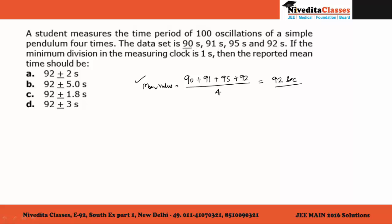Now the second part is finding the absolute error. For the mean absolute error, our mean value is 92. So for the first observation, the error is 2 (92 minus 90 is 2). In the second observation, the error is 1 (92 minus 91). Next, the error is 3 (difference between 92 and 95). And in the last, we have 0 difference.